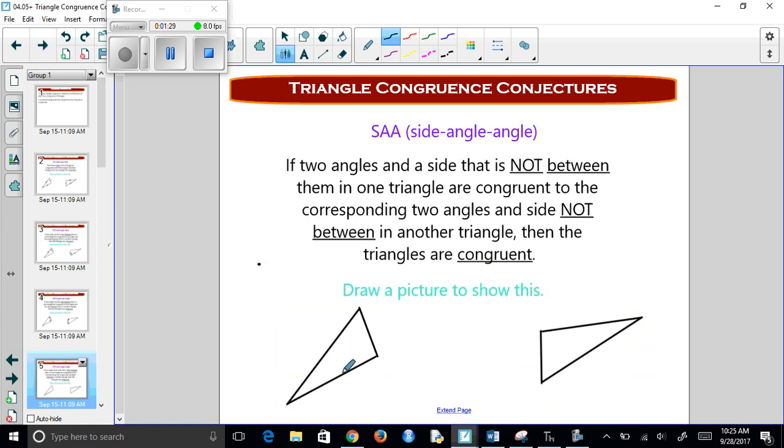Side-side-side-angle. So if I have a side, or no, side-angle-angle. So I have a side and the two angles that are not surrounding it. So a side and then angle-angle. This side, and then this angle matches there, this angle matches there. So it's side-angle-angle.